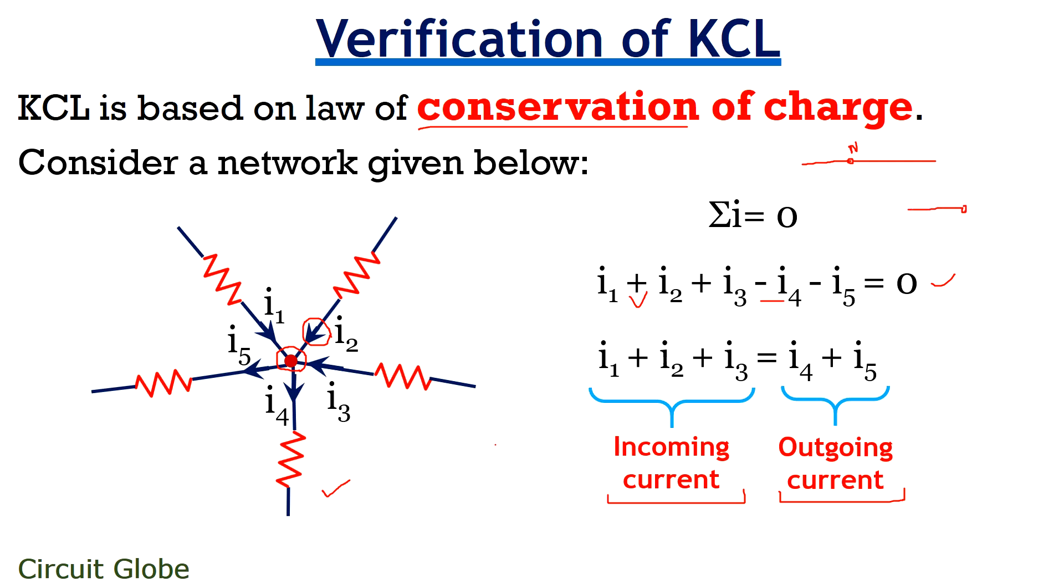But a junction is a point where three or more than three branches meet. Suppose this is a point and here three branches are meeting. So it will be called as a junction. But as we have already mentioned that it is not necessary that a node has only two branches. So it can be three, four and so on.